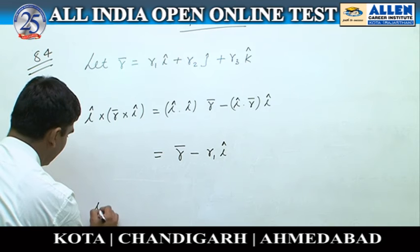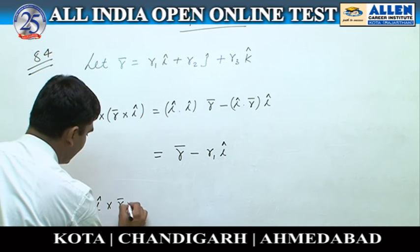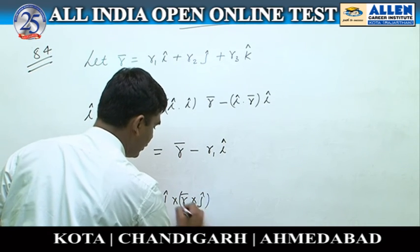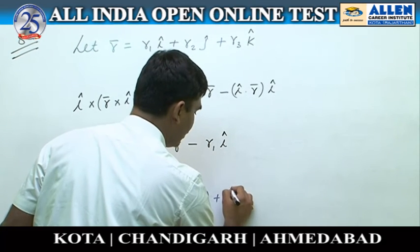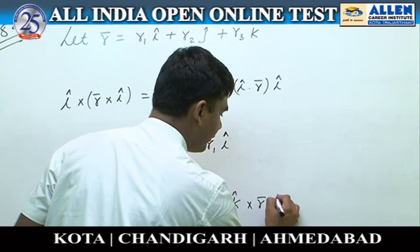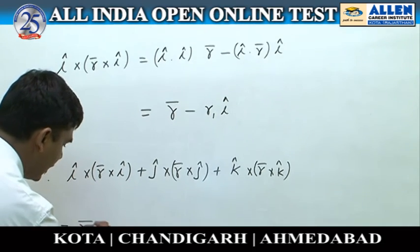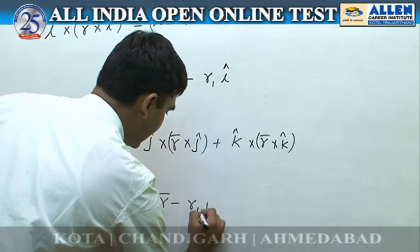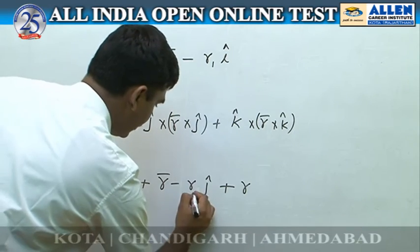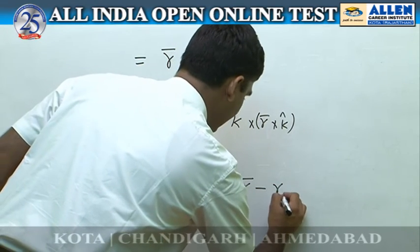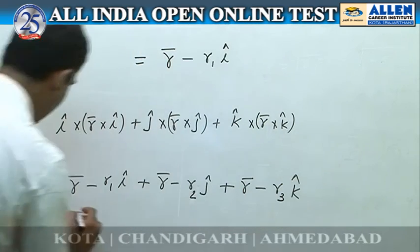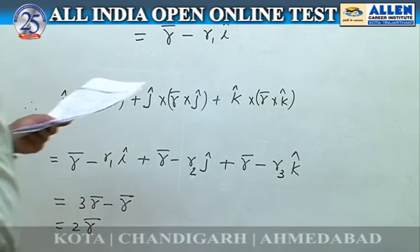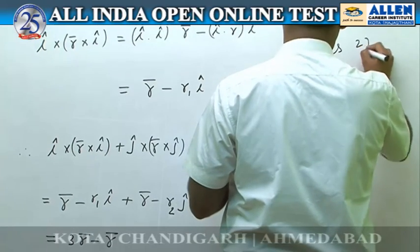Therefore i×(r×i) + j×(r×j) + k×(r×k) equals (r − r1·i) + (r − r2·j) + (r − r3·k). This equals 3r − (r1·i + r2·j + r3·k) = 3r − r = 2r. Therefore the answer is option number 2.